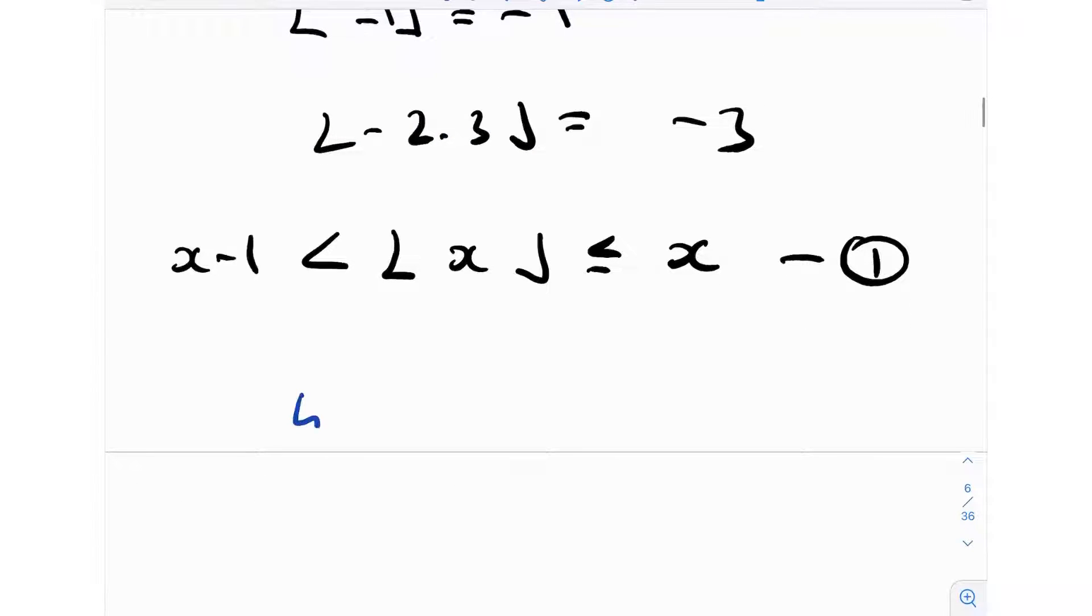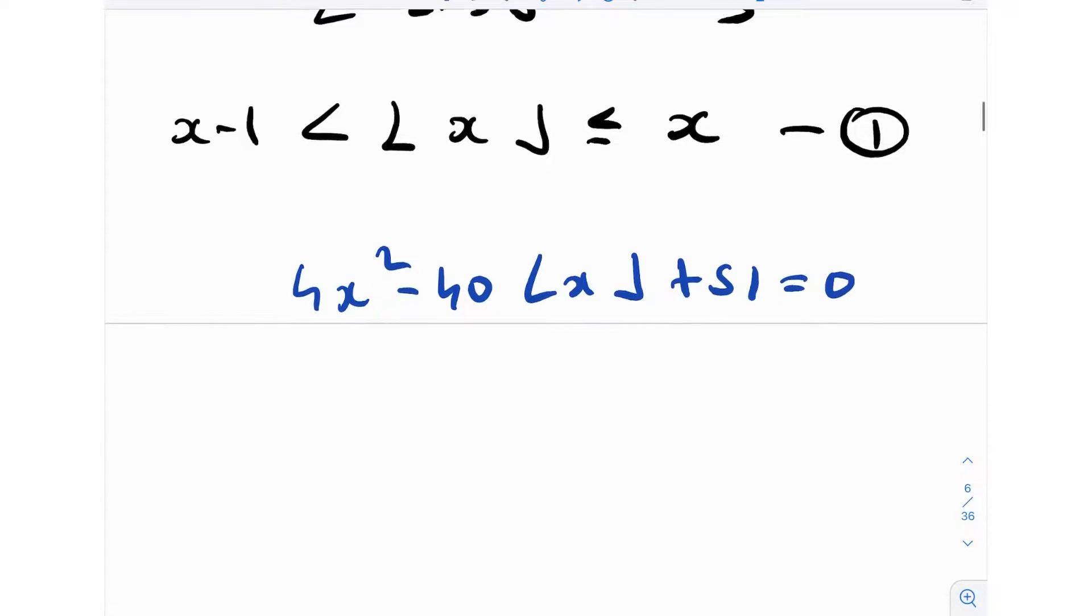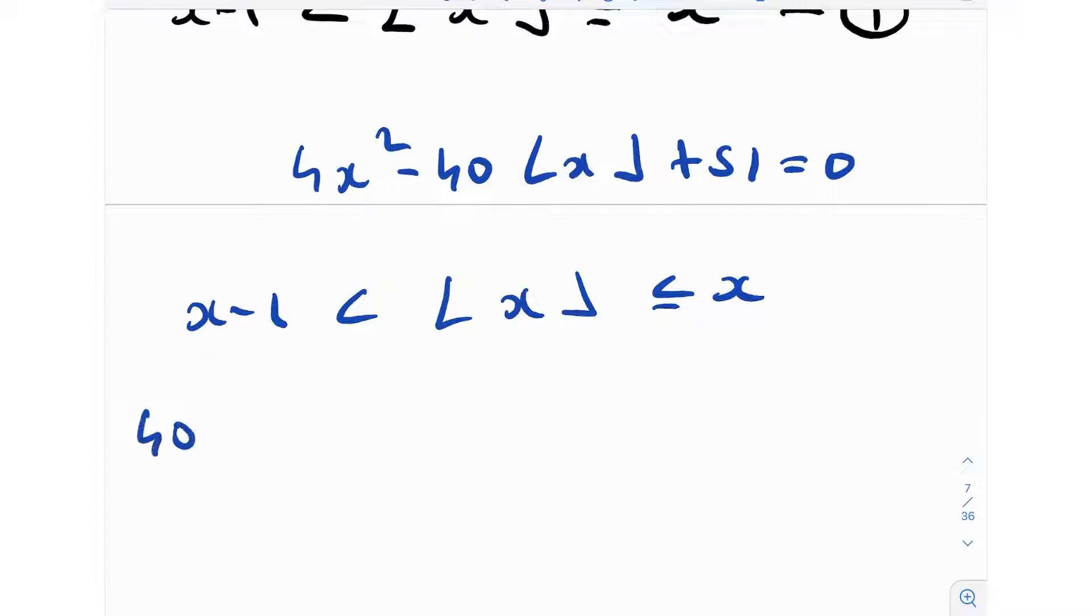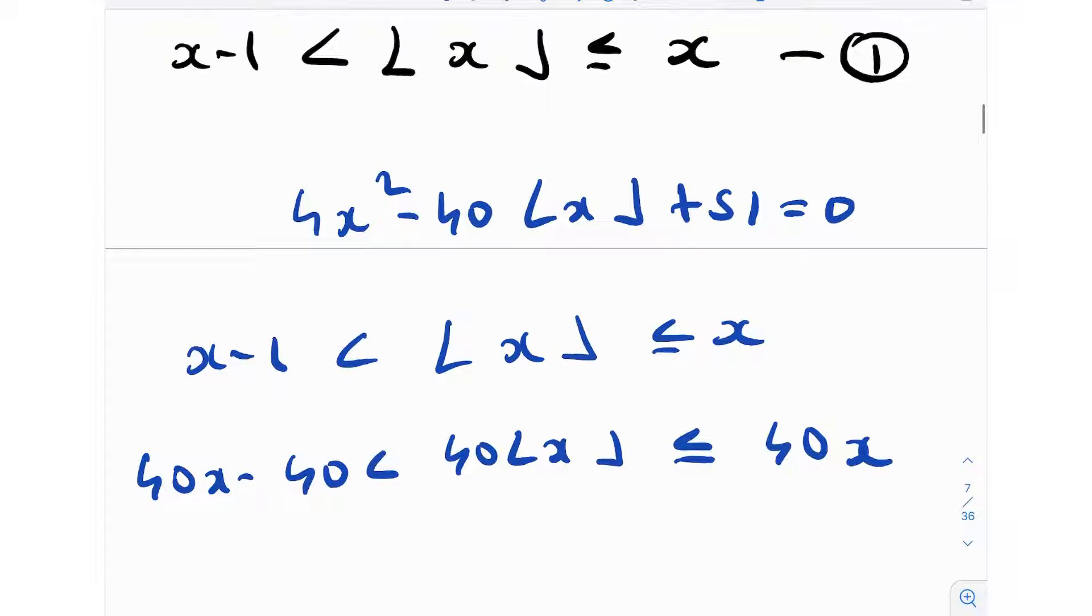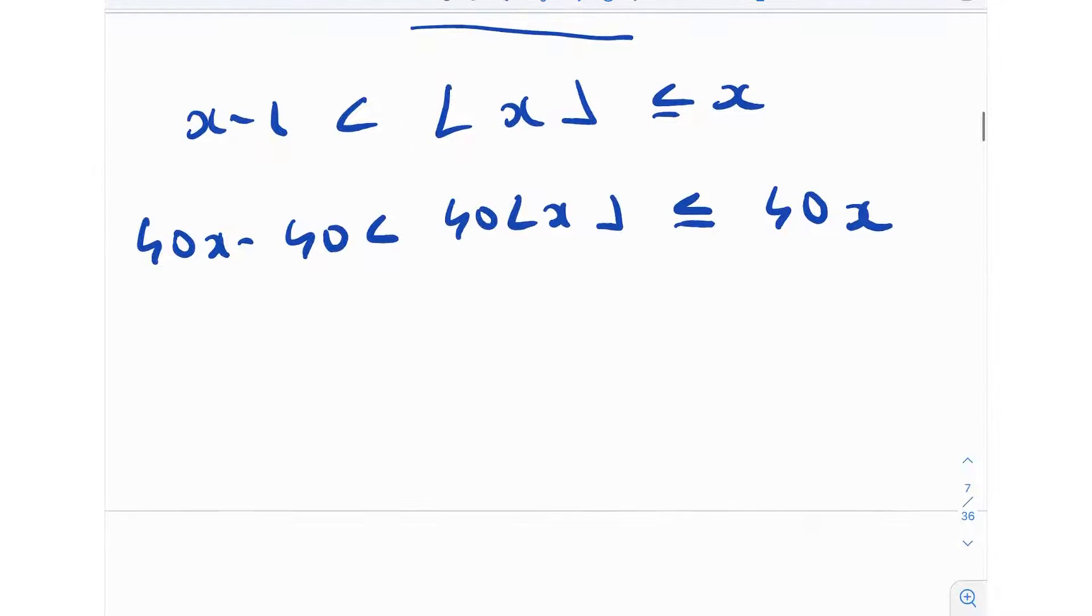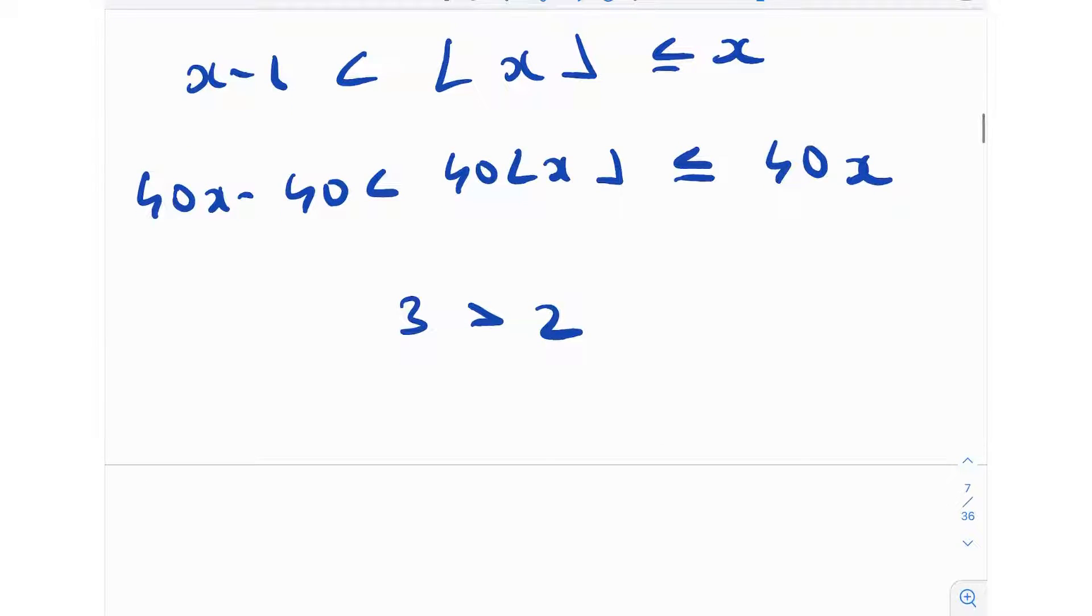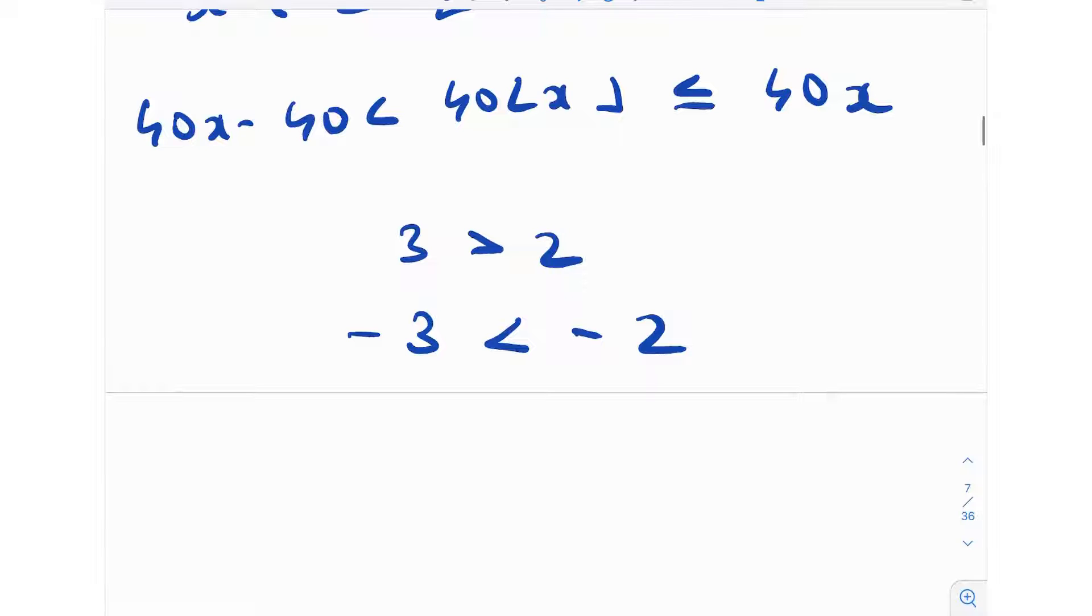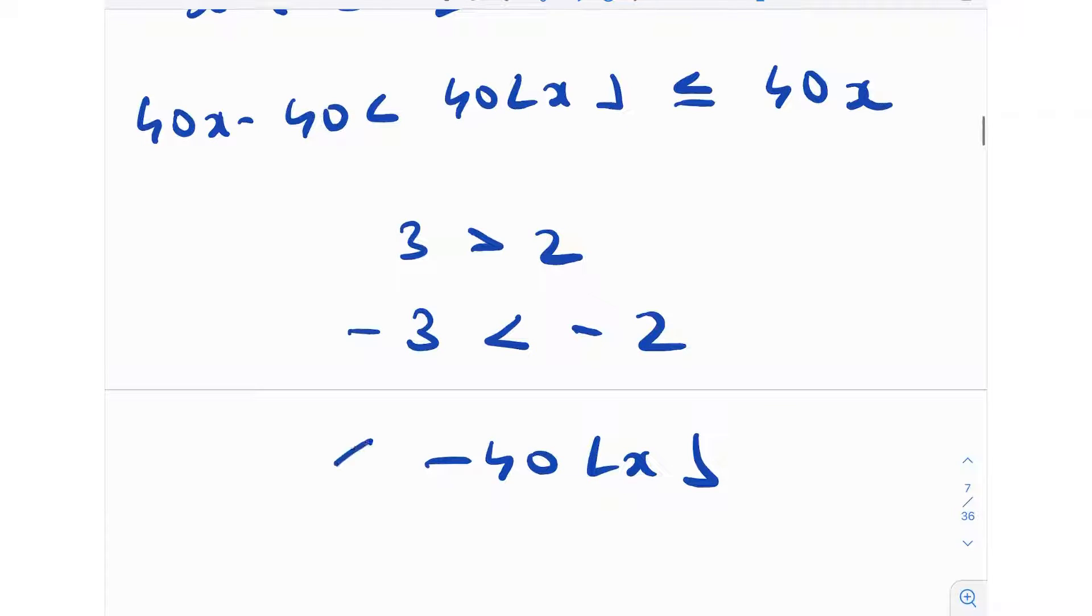In the question, they've given us 4x² - 40⌊x⌋ + 51 = 0. We know that ⌊x⌋ satisfies this given inequality. So maybe let's just multiply by 40 on both sides. You'll get 40x - 40 ≤ 40⌊x⌋ ≤ 40x. Because we have a negative in the second term, let's multiply this by negative. The thing to note is that whenever you swap an inequality by negative, it changes sign. For example, we know that 3 is greater than 2, but if I multiply this on both sides by -1, I know that -3 is smaller than -2. The sign of the inequality changes essentially.